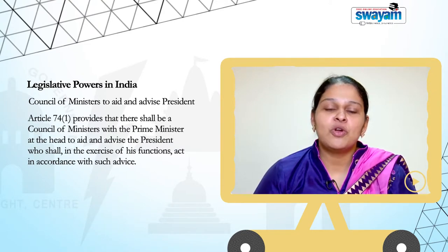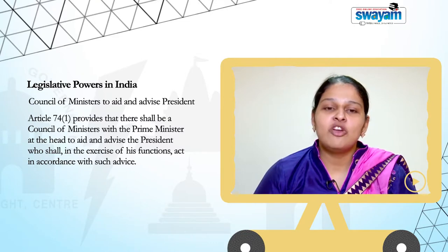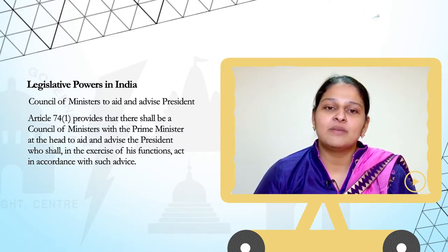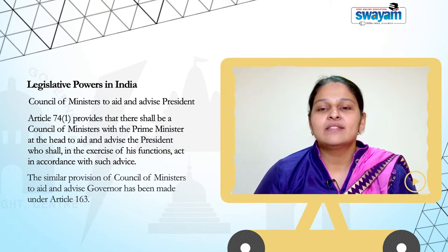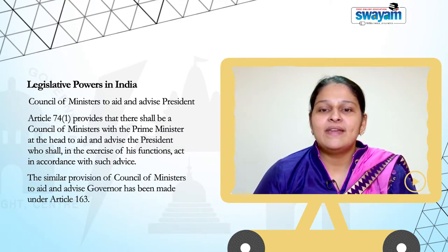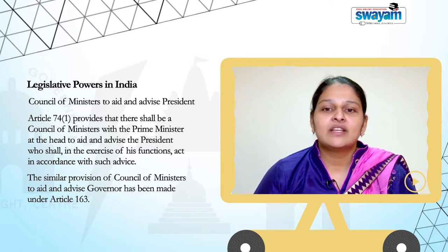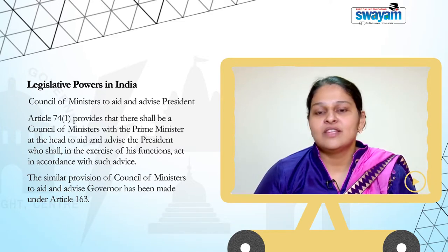Article 74 Clause 1 provides that there shall be a Council of Ministers with the Prime Minister at the head to aid and advise the President, who shall in exercise of his functions act in accordance with such advice. A similar provision for a Council of Ministers to aid and advise the Governor has been made under Article 163.